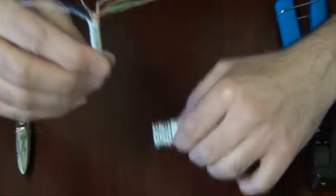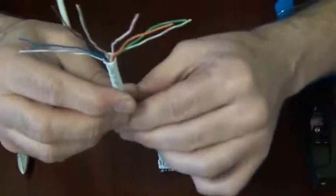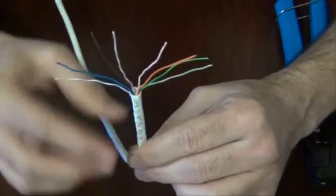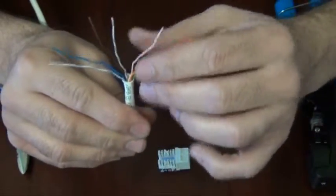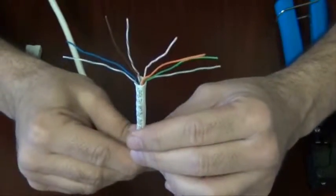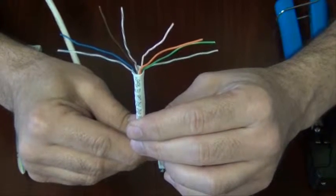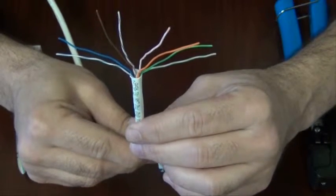As you can see I have the Cat 6 insert here as well as a Cat 6 cable that's already been stripped and ready for termination. If you'd like to see how to do this please look at the Direct Connect video on Cat 5 stripping.